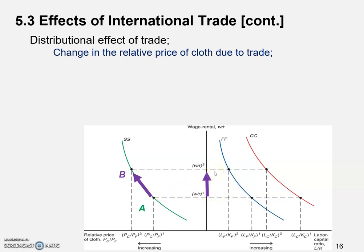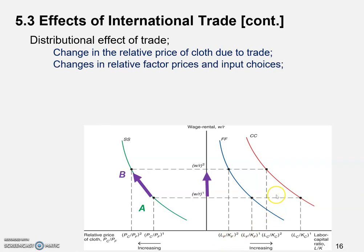When labor becomes more expensive relatively and capital becomes relatively cheaper, then in both the cloth and the food industry, firms tend to use less labor and more capital. That would lead to a smaller L to K ratio in both industries. Both industries are moving up along their curve, and this is how the change in relative factor prices W over R changes the input choices of these firms.